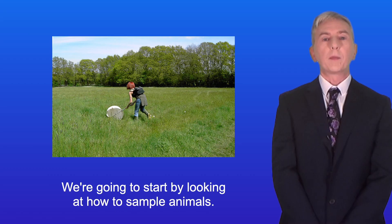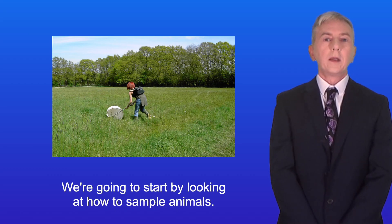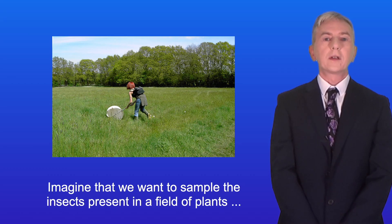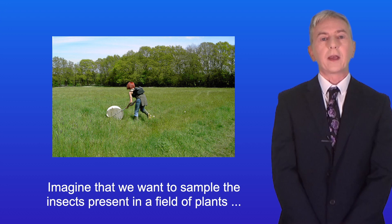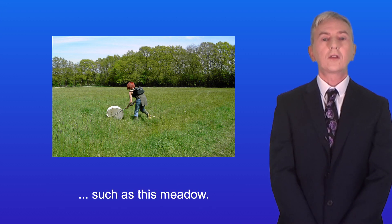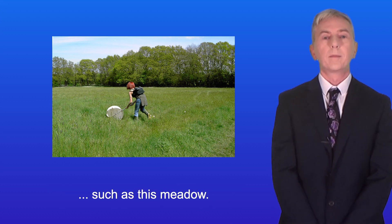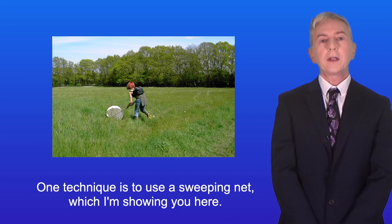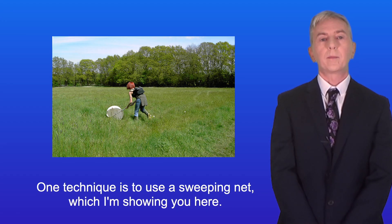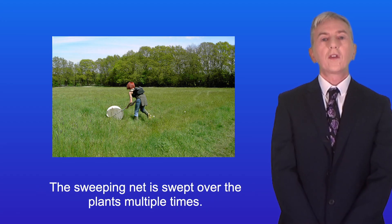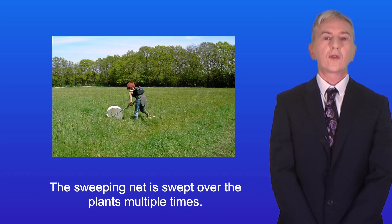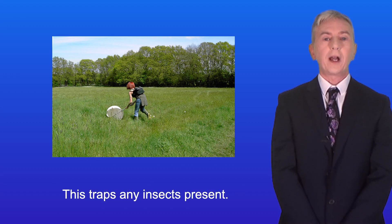We're going to start by looking at how to sample animals. Imagine that we wanted to sample the insects present in a field of plants such as this meadow. One technique is to use a sweeping net which I'm showing you here. The sweeping net is swept over the plants multiple times and this traps any insects present.